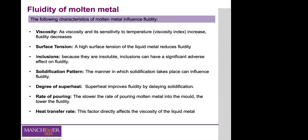Surface tension has an enormous impact on the fluidity of molten metal. A high surface tension normally reduces the fluidity. This happens because of oxide films on the surface of the molten metal, and the formation of these oxide films has a significant adverse effect on fluidity. For example, an oxide film on the surface of pure molten aluminium normally triples the surface tension, consequently reducing the ability of the material to flow.